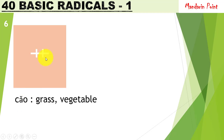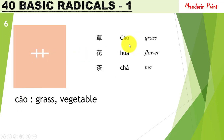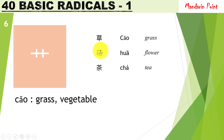The radical 艹 cǎo means 'grass' or 'vegetation.' You can see it placed on top of characters. For example, 花 huā meaning 'flower' — cǎo is at the top. 茶 chá meaning 'tea' — cǎo is at the top. All of these characters represent things having leaves or something related to plants.